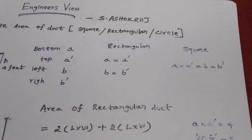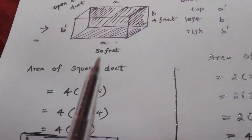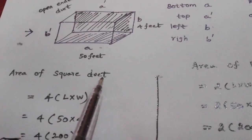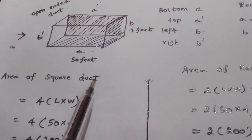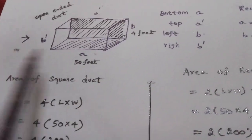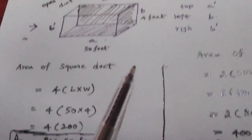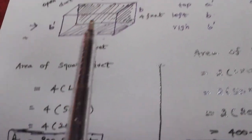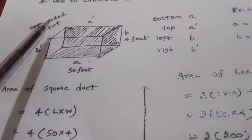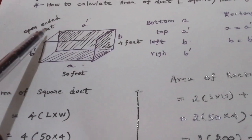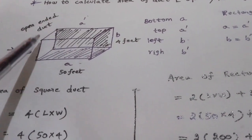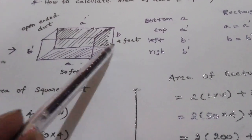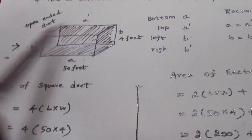So if you look for the area of the square duct — you have four square ducts, the front side is open and the back side is open. You can calculate the area of the square duct from its four sides.